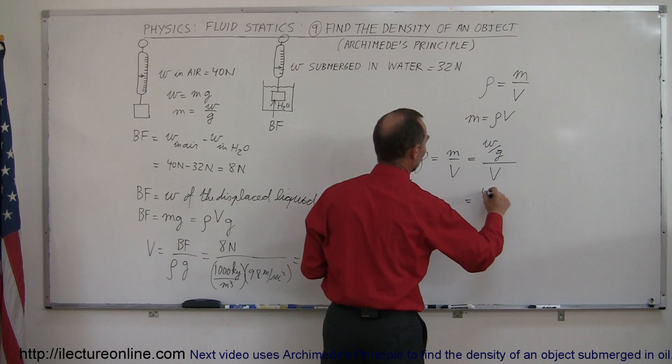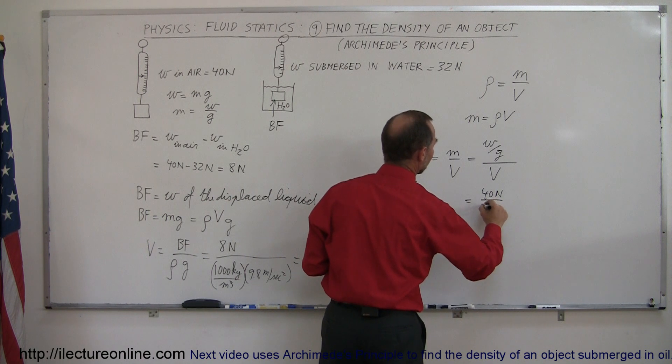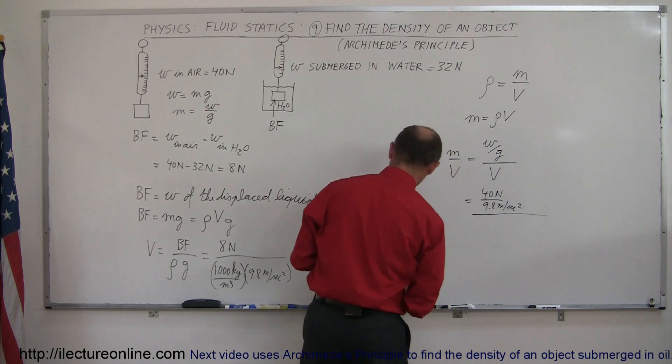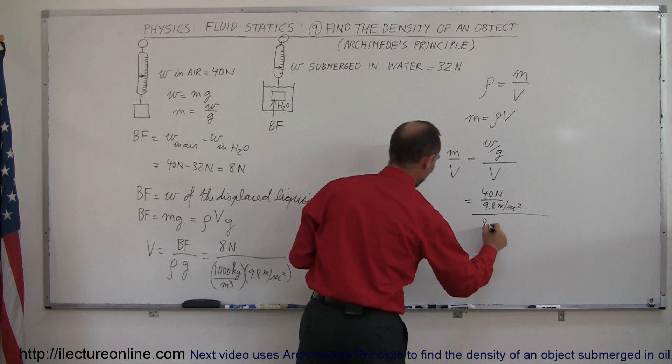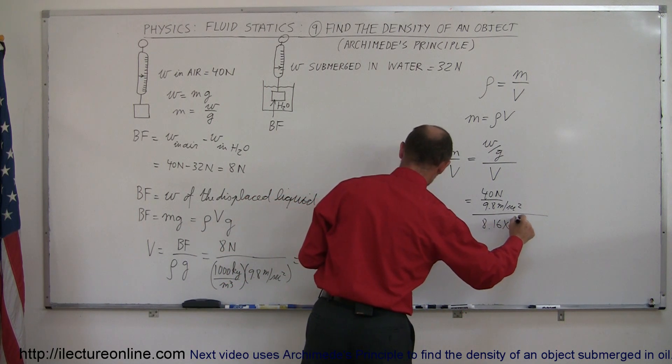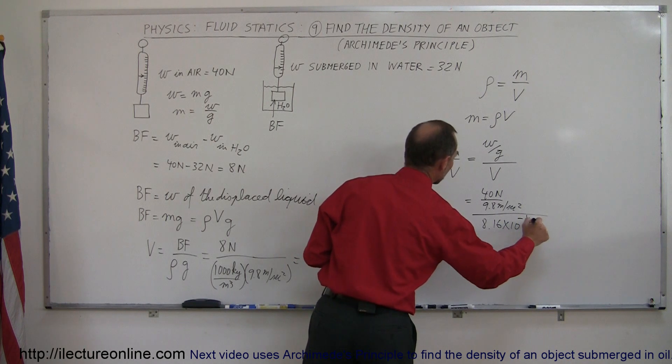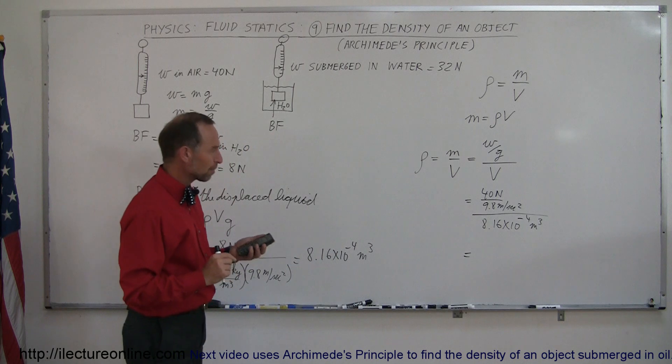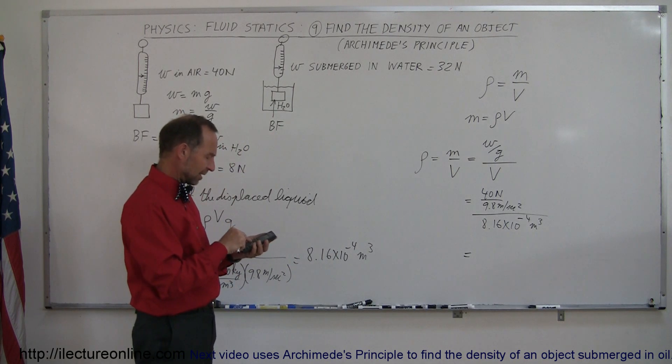So this is equal to 40 Newtons divided by 9.8 meters per second squared, and take the whole thing and divide it by the 8.16 times 10 to the minus 4 meters cubed. So the mass divided by the volume gives us the density.